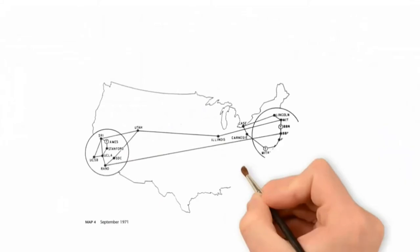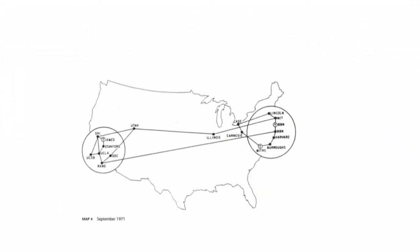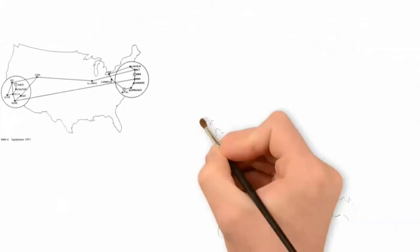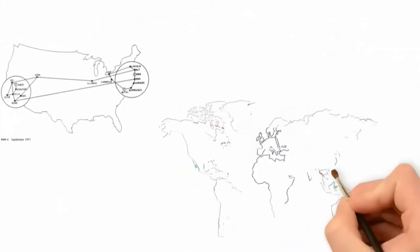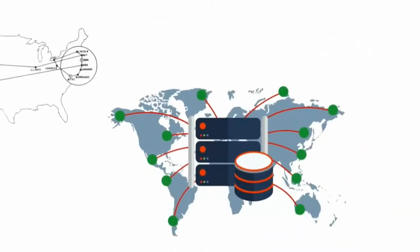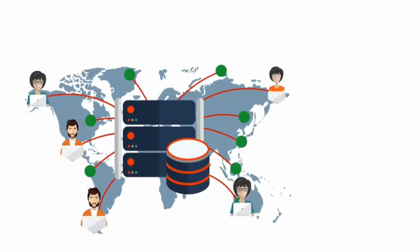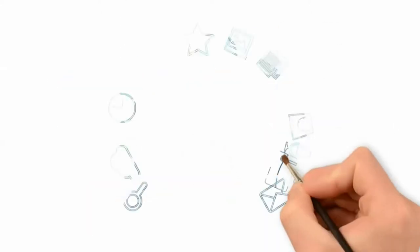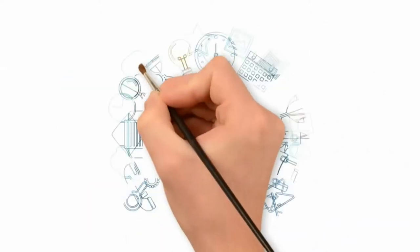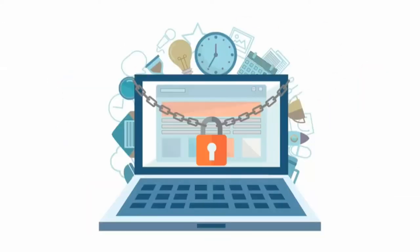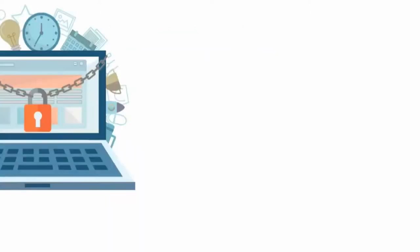Internet was originally designed to move large volume of data between a limited number of trusted users. Security was not the central component of the initial design of the Internet. No natural technical boundaries were put into place to protect the information.